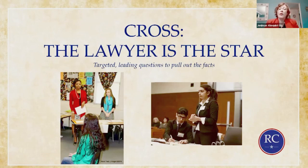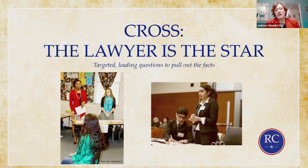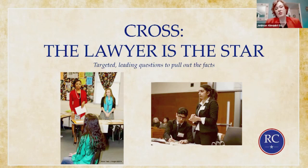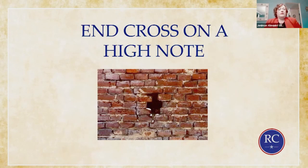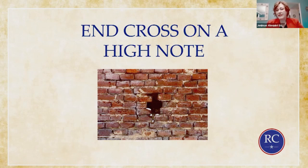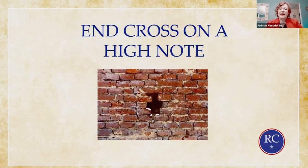Unlike direct, on cross-examination the lawyer is the star. On direct, you want the witness at the front of the jury's focus. But on cross-examination, you want to be in control — you want the jury paying attention to you as the lawyer. You always want to end cross-examination on a high note, though that is very hard. Sometimes the witness will start explaining things and go in a totally different direction, so be prepared to change the order of your questions. Always save a cross-examination question you know the answer to for a strong ending — you want to end any witness examination with a strong point that sticks in the jury's mind.